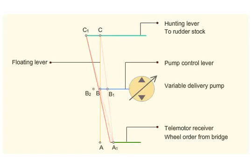When the steering wheel is moved to midships, the telemotor control will move the floating lever back to A, pulling the pump control rod to B2. The pump will discharge in the opposite direction, supplying pressurized oil to the other set of cylinders. This will turn the rudder in the opposite direction.